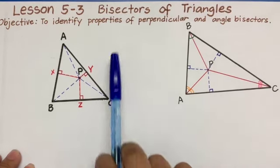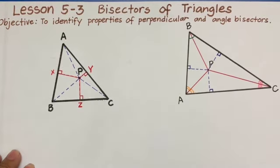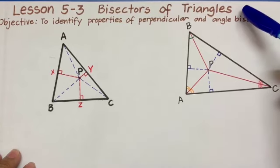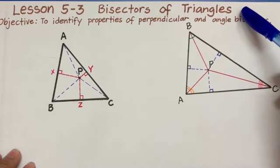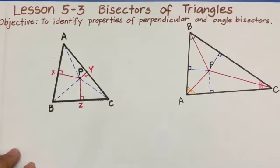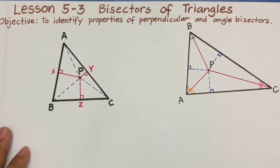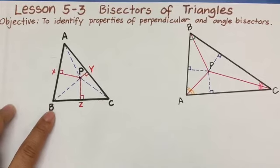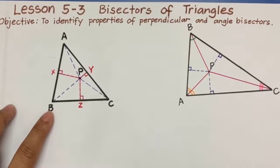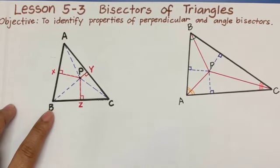First is bisectors. Bisectors are mainly lines that divide or cut the figure into two congruent figures. And these triangles are polygons that have three sides and three angles. So the lesson will be about bisectors of the sides and bisectors of the angles of the triangle, and what properties will be formulated on those bisectors.